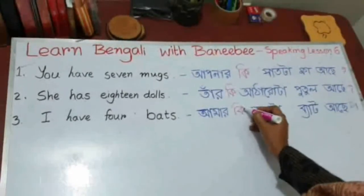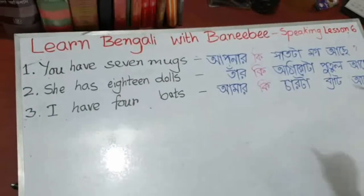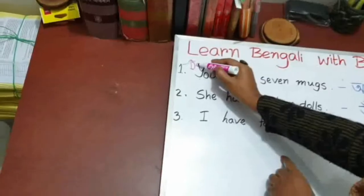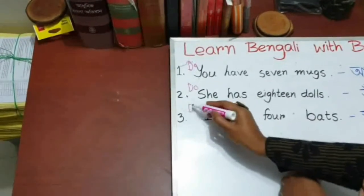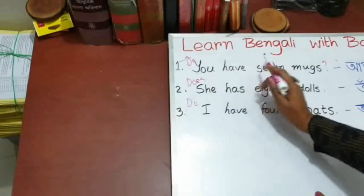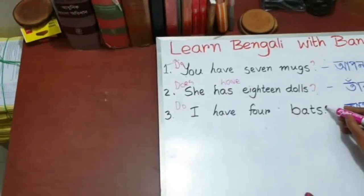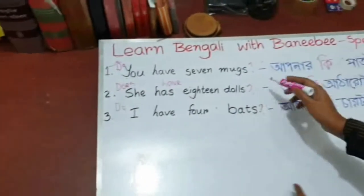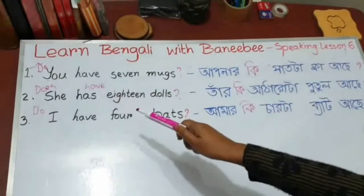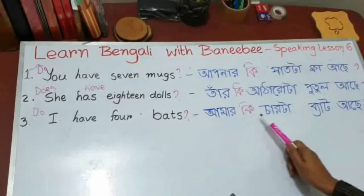Aaman ki chakta bat achhe? So that means when I add this 'ki', I am actually making it a question. In English: do you have seven moths? Does she have 18 dogs? Do I have four bats? So that is the translation of these sentences. Aapnar ki shakta mob achhe — do you have seven moths? Tar ki aatharota putul achhe — does she have 18 dogs? Aaman ki chakta bat achhe — do I have four bats?